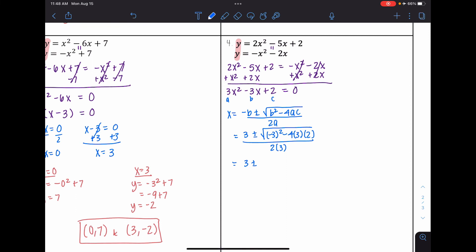And so when I simplify inside, negative 3 squared, I get 9 minus 4 times 3 is 12 times 2 is 24. So 9 minus 24, I get negative 15 over 6. However, we learned that when you take a square root of a negative number, you get imaginary numbers.